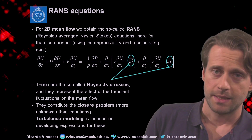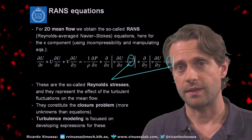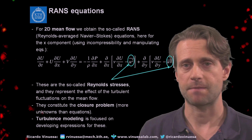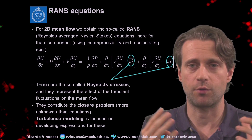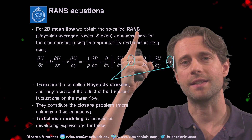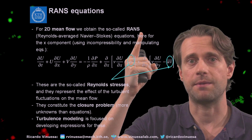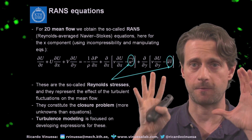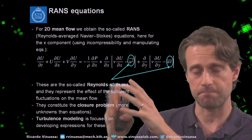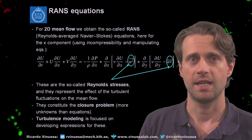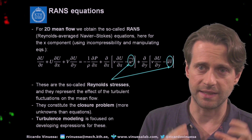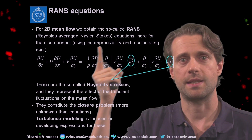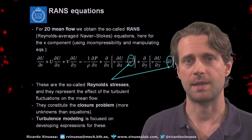That's actually helpful, because then we can manipulate our governing equations to try to obtain something useful. So when we have the two-dimensional mean flow equations, we can obtain the so-called RANS — the Reynolds-Averaged Navier-Stokes equations. We apply the Reynolds decomposition first, and then we average in time and over the periodic directions.